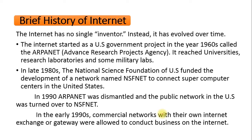Now we shall see a brief history of internet and how it evolved. The internet has been in a state of continuous evolution since the late 1960s. It has no single inventor — instead it evolved over time, meaning the internet is not owned by any single company, organization, or country. Anyone can create a network and provide services to different users all over the world.